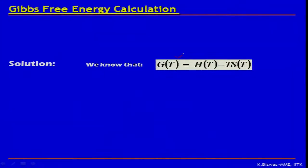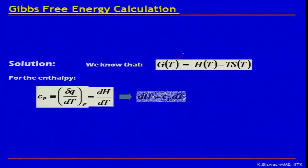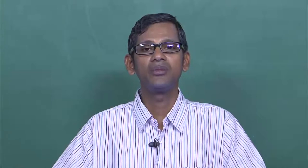H is known as enthalpy of the system. Enthalpy is defined as H equal to E plus PV, where E is the internal energy of the system and P and V are the pressure and volume of the system. So H is nothing but the total energy of the system — the internal energy plus the pressure-volume term — and internal energy is the summation of kinetic and potential energy of the atoms.